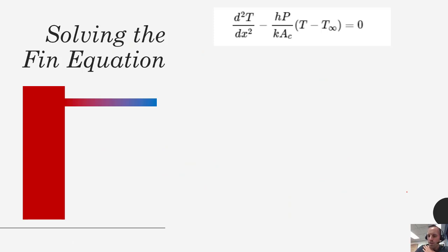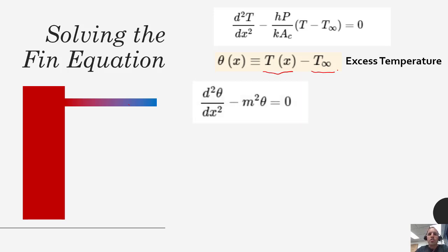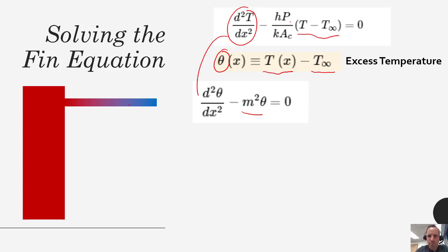We take our second order differential equation, and to make this a homogeneous differential equation we're going to define a new variable theta as a function of X. Theta is defined as the temperature at whatever point you are down the length of the fin minus the ambient temperature T_infinity — this is known as the excess temperature. This is really just an algebraic simplification to make the integration a little bit easier. Substituting in theta, because T_infinity is just a constant the second derivative of temperature with respect to X is equivalent to the second derivative of theta with respect to X.